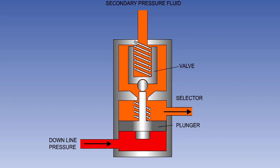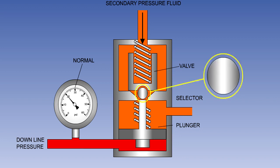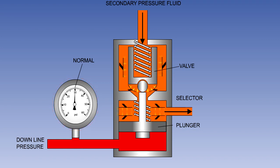A hydraulically operated sequence valve uses the change in hydraulic pressure as a service operates for its operation. In the diagram, hydraulic pressure in the supply line to the service being monitored is felt on the bottom of the plunger. While the service is operating, this pressure will be low, allowing its spring to keep the plunger down. Fluid for the next service in the sequence is fed into the top of the valve, with its outlet port on the right. The spring, combined with the fluid pressure, will push the valve onto its seat, sealing the orifice. Once the first service reaches the end of its travel, pressure will build up below the plunger. The plunger will move up, pushing the ball valve off its seat, and allowing fluid to flow through to the next service.